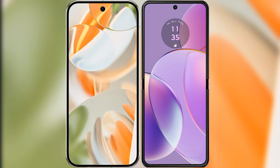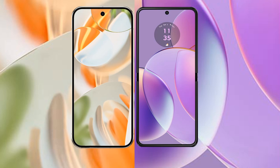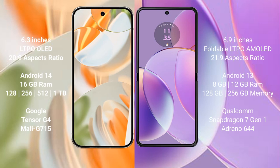I will compare the new Google Pixel 9 Pro with the Motorola G40. The Google Pixel 9 Pro has a 6.3-inch LTPO AMOLED display with an aspect ratio of 20:9. The Motorola G40 has a 6.9-inch foldable LTPO AMOLED display with an aspect ratio of 21:9.